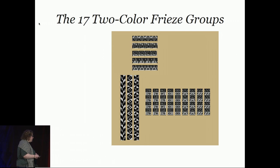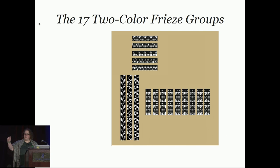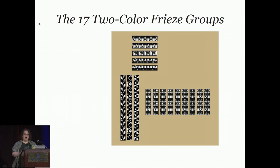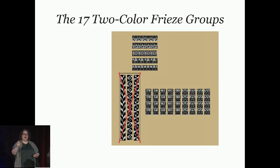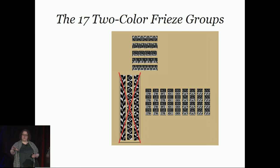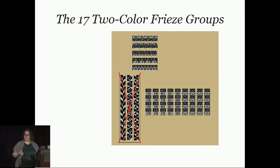The two-color freeze groups are a little bit less known. These are patterns that repeat in one direction where there is some symmetry that swaps the colors. For example, if you look at this top one, if you reflect across the horizontal center, black and white change places. Same for the one below it, but the one on top also had some 180-degree rotations that swapped the colors. It turns out that there are 17 of those — the same as the wallpaper groups. It must mean something. It doesn't. It just happens to be the same number.